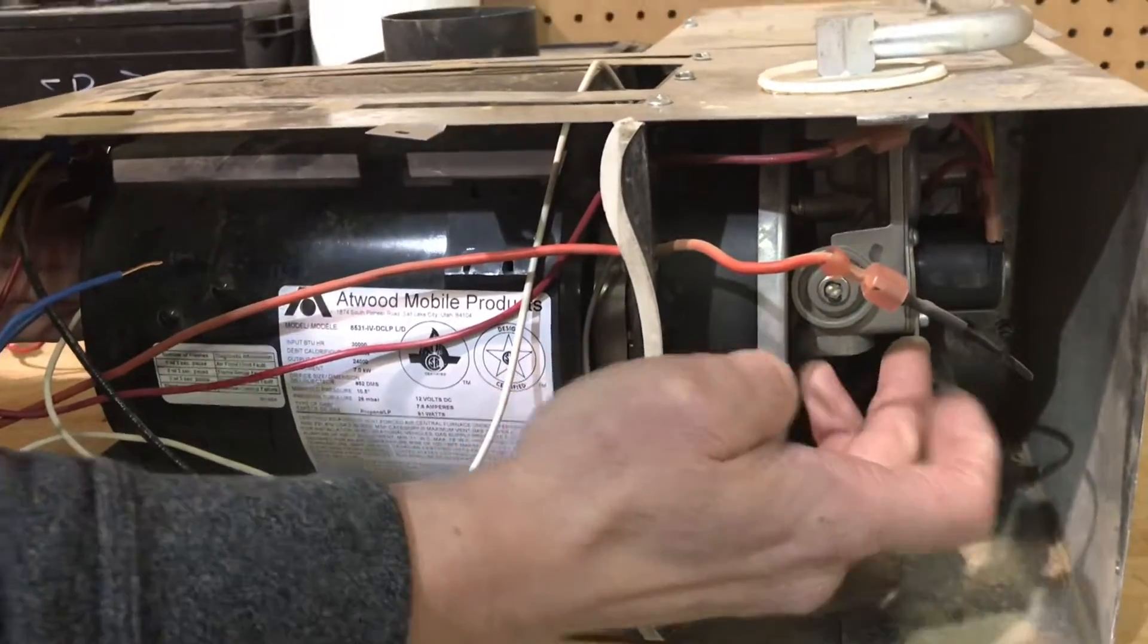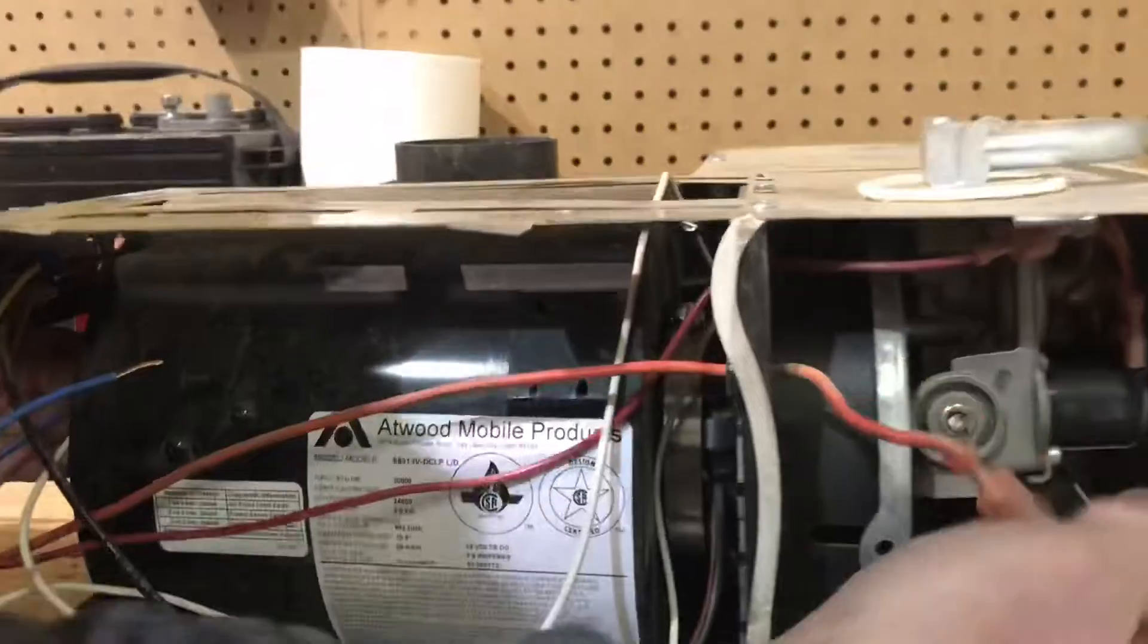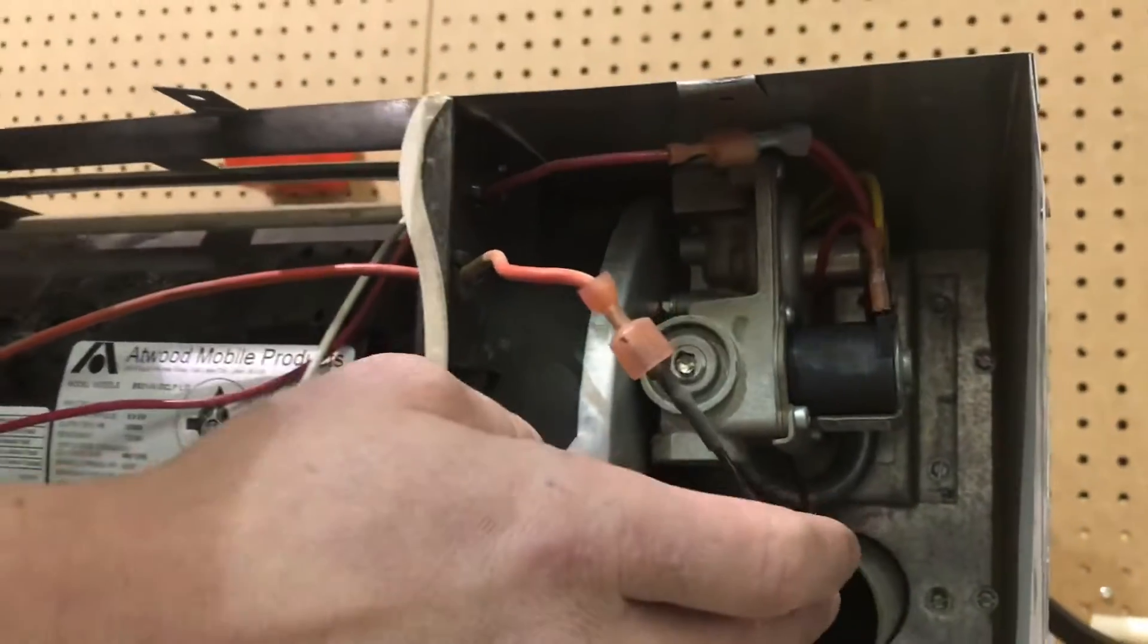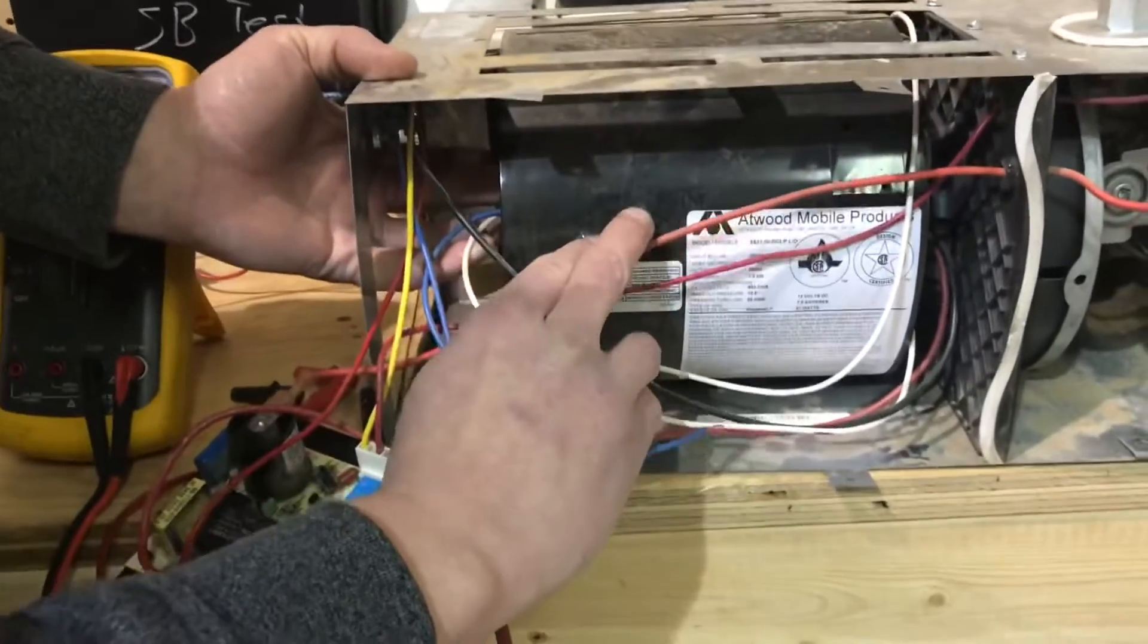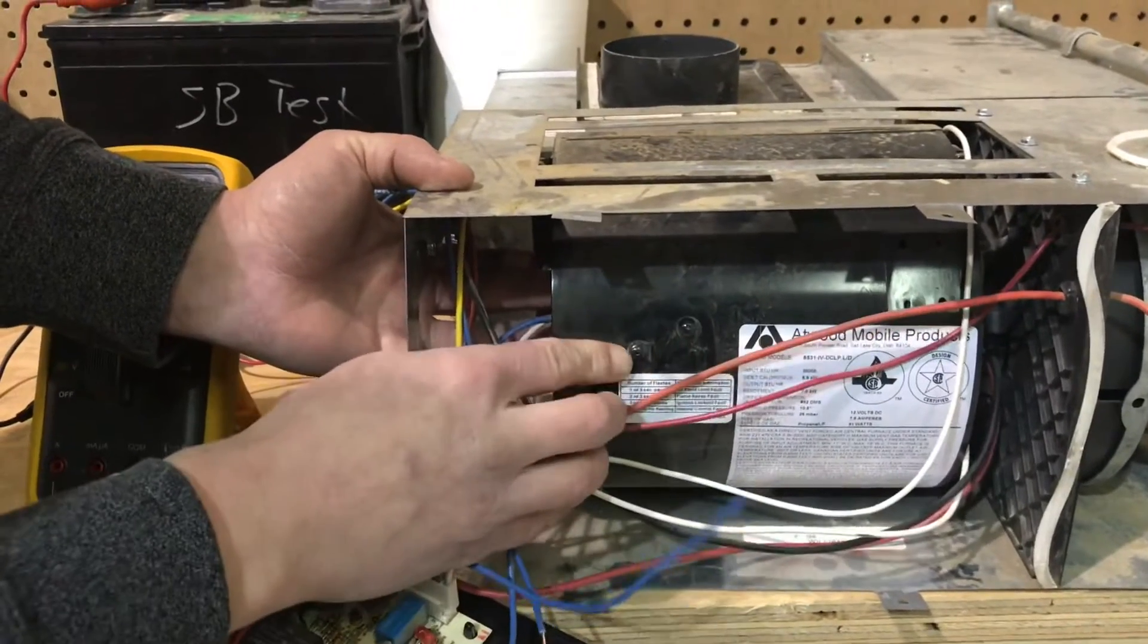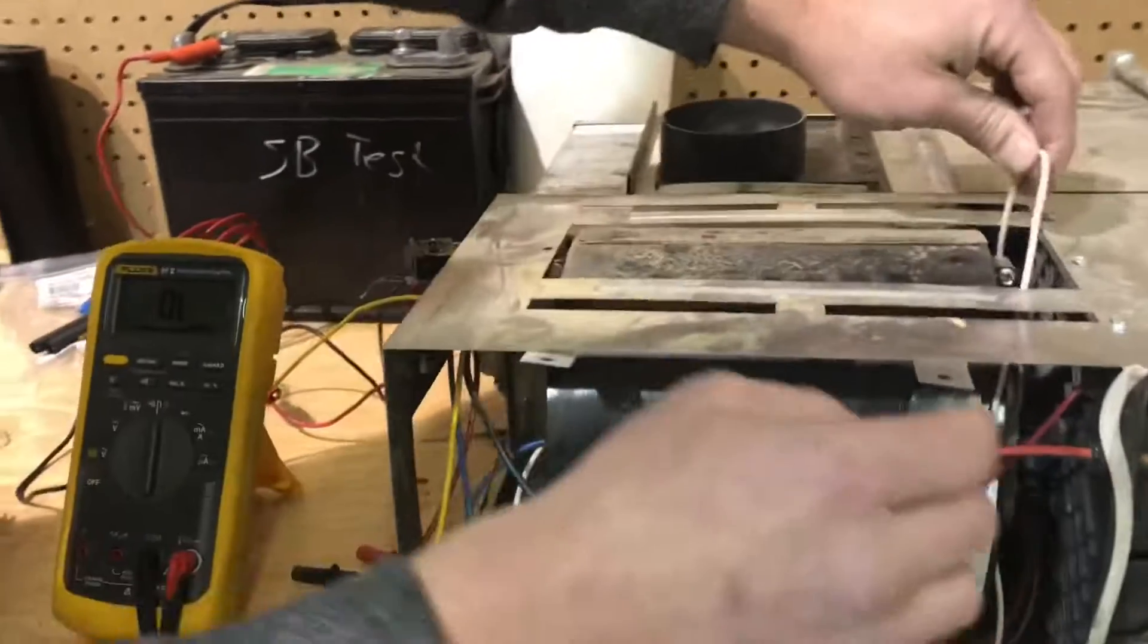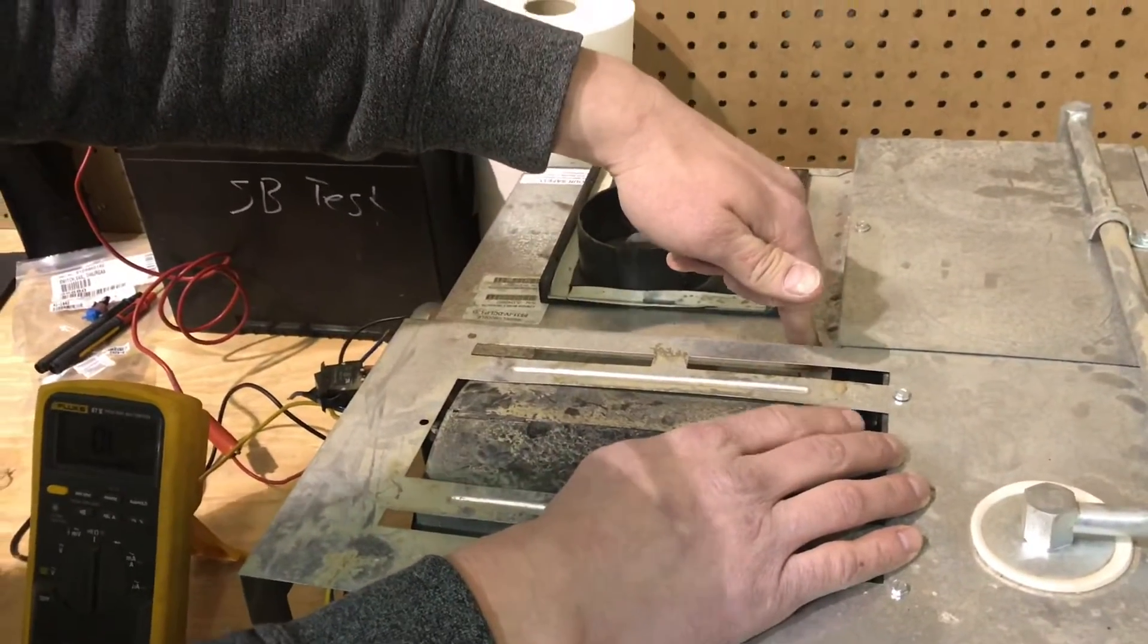There is the gas valve. This lead here leads to the igniter which is tucked up back in there with the gas burner. That is tucked in behind. In this shroud itself, behind these two little dimples here, is a sail switch. Then behind that, attached to these wires here on these Atwoods, is a high limit switch.